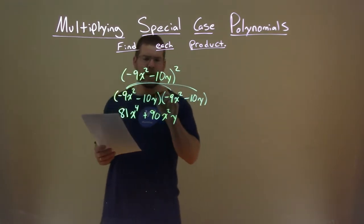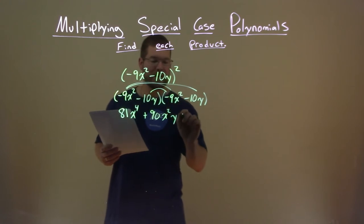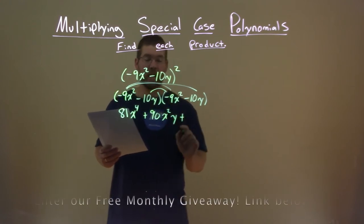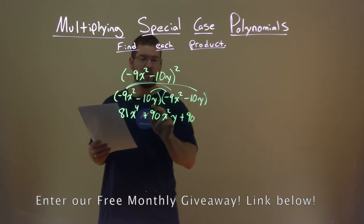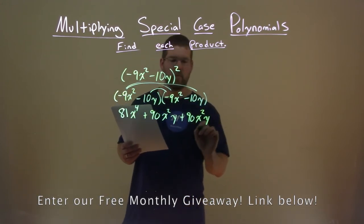Inside, negative 10y times a negative 9x squared. Negative times a negative, again, is a positive. 10 times 9 is 90, and x squared times y, or y times x squared. We can write it like this, x squared y.